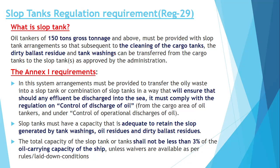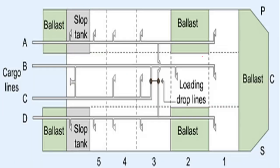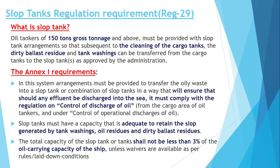The regulation also states that the capacity of the slop tank should be adequate to retain the slop generated by tank washing. For example, on a ship of 50,000 deadweight tonnage, all the tank washing sludge and washing water from all cargo tanks will be deposited in the slop tank. That capacity must be sufficient to hold the tank washing water, ballast residue, and oil residue.